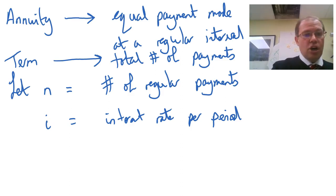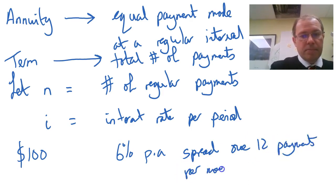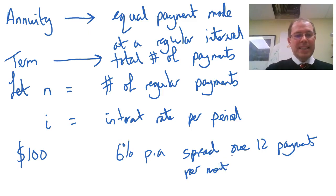Imagine you are saving $100 a month into your bank account. So every month you put $100 in and say the bank gives you 6% interest per year, per annum, but they spread it over 12 payments, so per month. This means straight away that this is an annuity because you're doing regular payments of $100 a month.